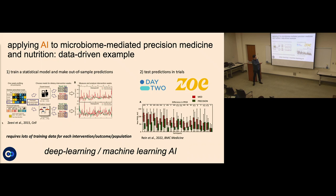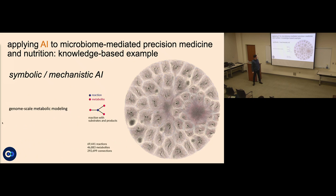They could do this using nutritionist-designed diets and their algorithmic diet, and they performed similarly well. Recently, the company Day Two came out of this work in precision nutrition, and they did a head-to-head comparison between their algorithmic diet and the Mediterranean diet. They found that for most subjects, there was slightly more mitigated glucose spiking in the precision-designed diet. This was an important proof of concept — maybe there's something more personalized than just eating a Mediterranean diet.